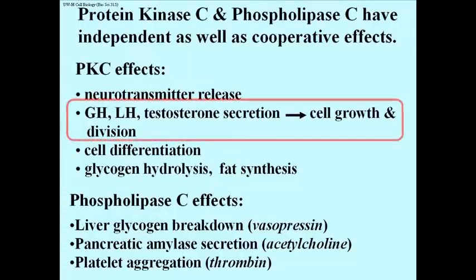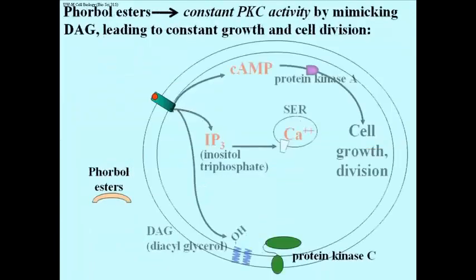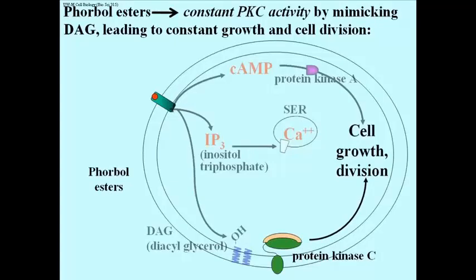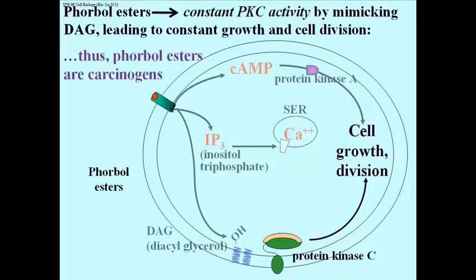Some chemicals mimic the mitogenic functions of protein kinase C. One class of carcinogenic chemicals is the phorbol esters, normally found in some plants. As shown here, they can get into cells and bind to protein kinase C, activating it and causing the cell to respond as if it were responding to hormones that activate PKC. Because human cells have no way to get rid of the phorbol esters, the activated PKC has persistent mitogenic effects, leading to cancer and tumor formation.